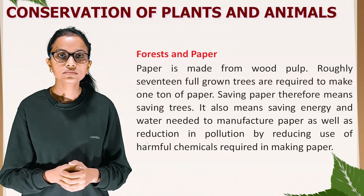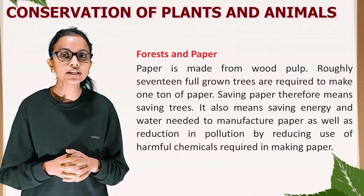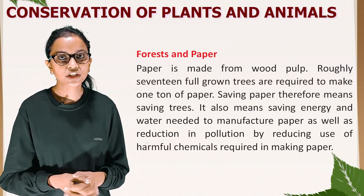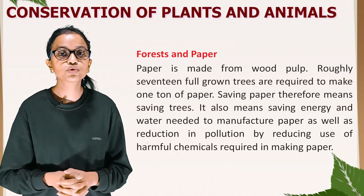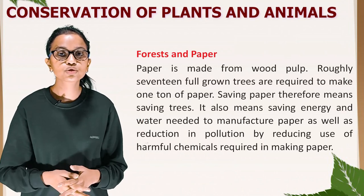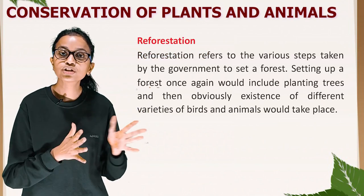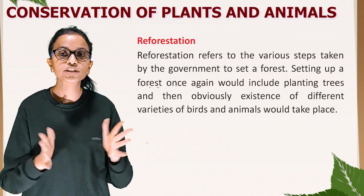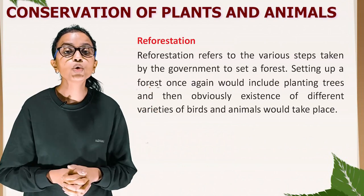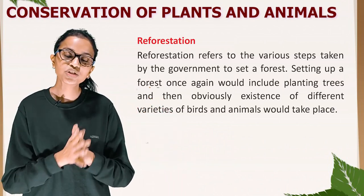Forests and paper: paper is made from wood pulp, and roughly 17 full-grown trees are required to make one ton of paper. Saving paper therefore means saving trees. It also means saving energy and water needed to manufacture paper, as well as reduction in pollution by reducing use of harmful chemicals required in making paper. Reforestation refers to the various steps taken by the government to re-establish a forest, including planting trees, which will then support different varieties of birds and animals.